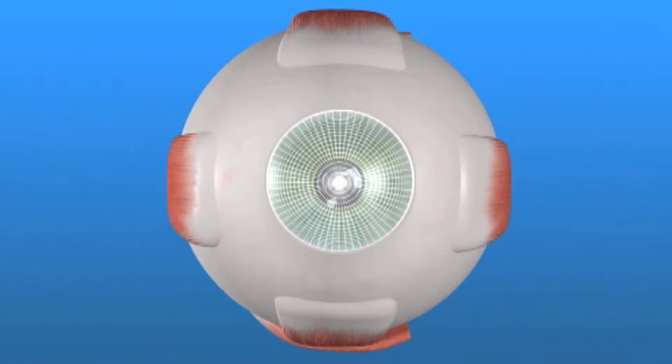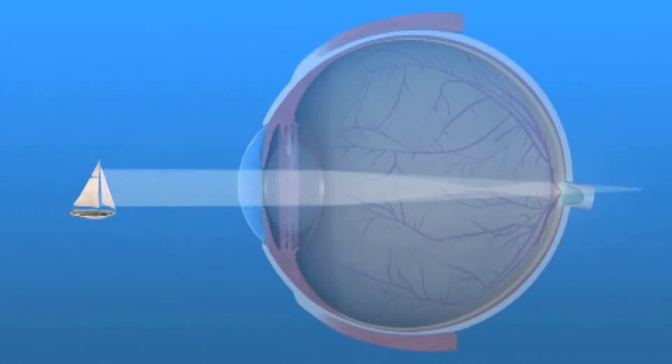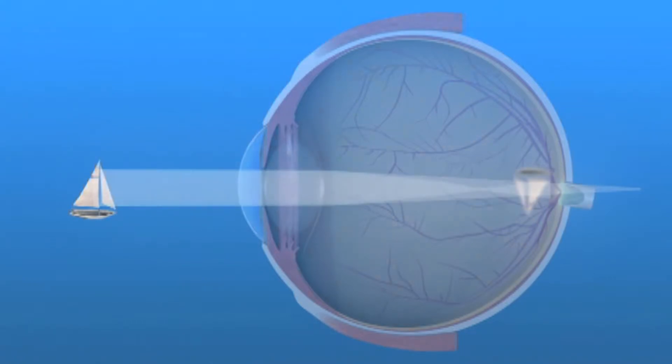When light passes through the cornea and it is spherical, it refracts the light evenly in all directions, thereby giving you a clear view of an object. With astigmatism, the cornea is more of an oval shape or a football shape. When light passes through that football shape, it is refracted more in one direction than another, and the image thereby becomes a blurry image. You're not seeing as sharply for objects either in the distance or close up.